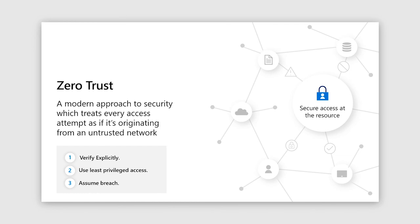A zero trust approach is a modern approach to security which treats every access attempt as if it's originating from an untrusted network. Instead of believing everything behind a corporate firewall is safe, a zero trust approach assumes a security threat at every digital interaction. Every access request is strongly authenticated, authorized within policy constraints, and inspected for anomalies before granted access. Everything from the user's identity to the application's hosting environment is used to verify the request and prevent breach.